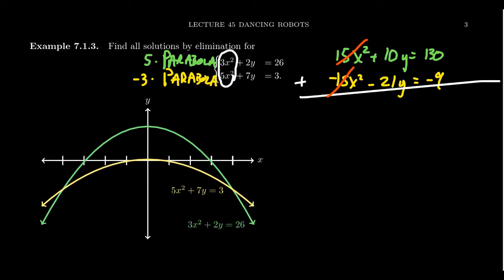Combining the rest, we get 10y - 21y = -11y, and then 130 - 9 = 121. Dividing both sides by -11 gives us y = -11.